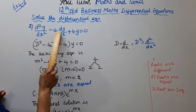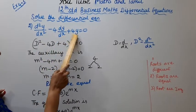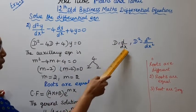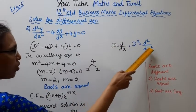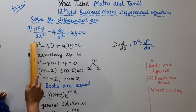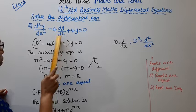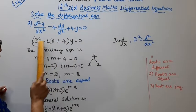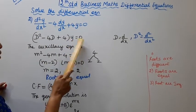d²y/dx² - 4·dy/dx + 4y = 0. D represents d/dx, D² represents d²/dx². We can write this as (D² - 4D + 4)y = 0.